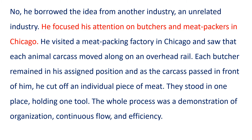He focused his attention on butchers and meatpackers in Chicago. He visited a meatpacking factory in Chicago and saw that each animal carcass moved along on an overhead rail. Each butcher remained in his assigned position, and as the carcass passed in front of him, he cut off an individual piece of meat. They stood in one place, holding one tool. The whole process was a demonstration of organization, continuous flow, and efficiency.